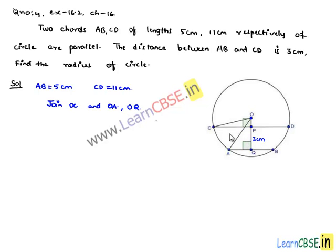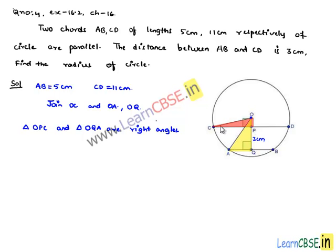If we observe, we have two right angle triangles: triangle OPC and triangle OQA. Since OC and OA are lines from the center to points on the circle, they are nothing but the radius. Therefore, OC equals OA, which equals radius r of the circle.